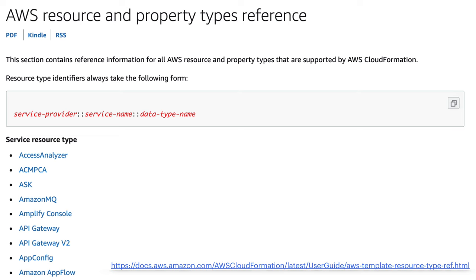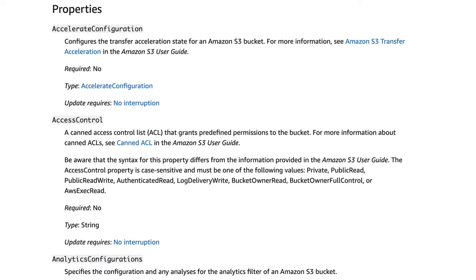These resources you can look up in the documentation — all the different resource types and their properties are documented there. For example, here are a couple of properties for the S3 bucket, such as access control. We can set whether or not the bucket is public as one of the properties on the S3 bucket resource.